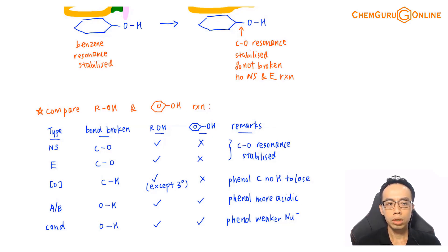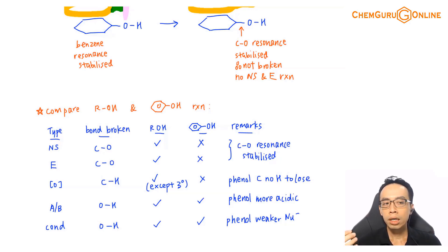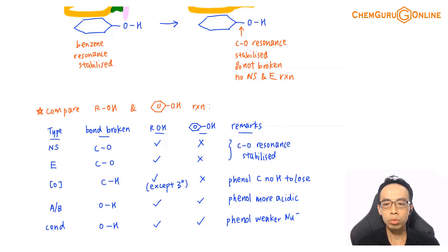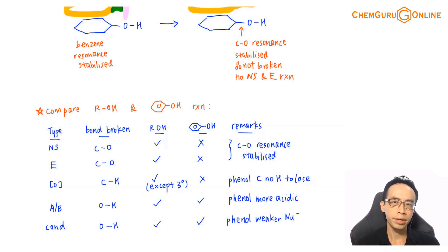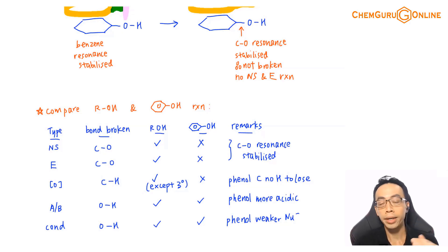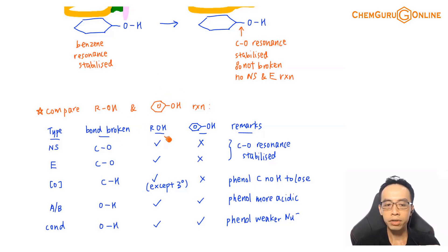Consistently, when a functional group is attached to benzene, its reactivity is affected to a very significant extent. This is yet another manifestation of that principle. When the OH group — the so-called alcohol group — is attached to benzene, the CO bond cannot be broken, so there is no substitution reaction and no elimination reaction.